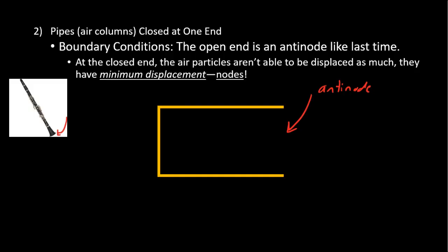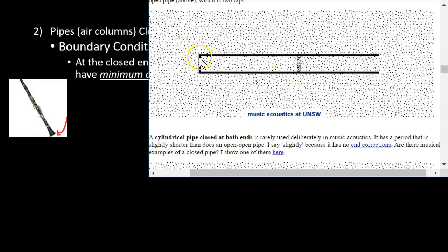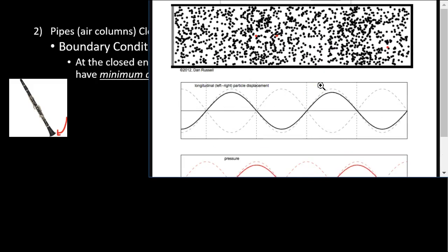Let's look at the next example: pipes that are closed at one end. Here I have my clarinet — this end is open, this end is closed. I've closed off one of these pipes and kept the other end open. If one end is open, it's going to behave the same way. Let me go back to my animation. Here again, but now this end is blocked. As that wave pulse goes in this direction, the open end allows particles to spread out — that's an antinode. But notice what happens when it hits the closed end.